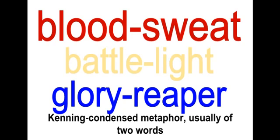To summarize the poetic devices in Beowulf: these were all done for entertainment, performed spontaneously but by prepared poets. A stich is a whole line; a hemistich is the half line. Each half line has two stressed syllables and unstressed syllables. A caesura is the pause that allows the performer to take a breath after a half line. Alliteration is the repetition of beginning sounds on stressed syllables. Kennings are short condensed metaphors.